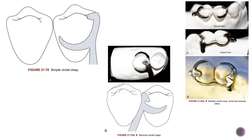Reverse circulate clasp is used when the retentive undercut on the abutment teeth is located adjacent to the edentulous space — the opposite of simple circulate. In simple circulate, the undercut is away from the edentulous space; in reverse circulate, the undercut is adjacent. It can be used in distal extension cases.